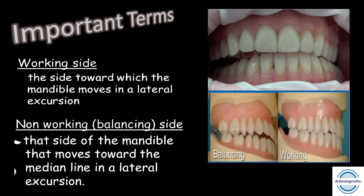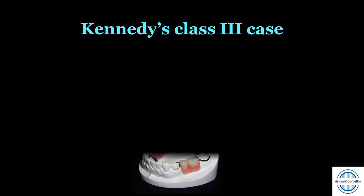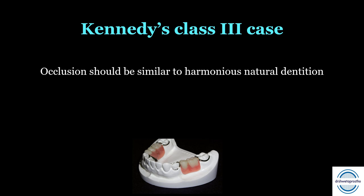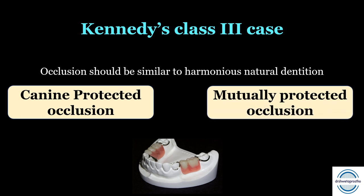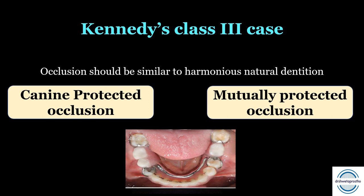Let's start with the easiest case — Kennedy's Class 3, where both sides of the saddle area have teeth. In this case we give occlusion similar to the harmonious natural dentition. We evaluate whether canine-protected occlusion or mutually protected occlusion is present in the mouth and give the same occlusal scheme, because stability of the RPD is not a major issue in these cases — both sides of the denture space have teeth.